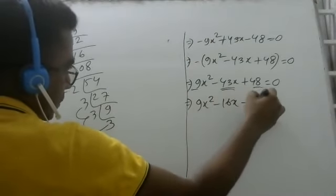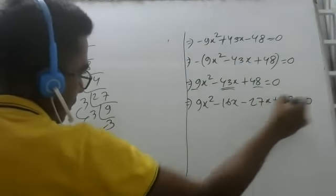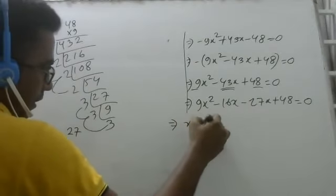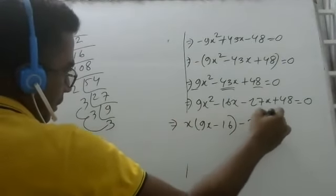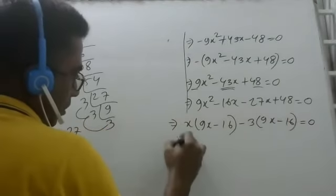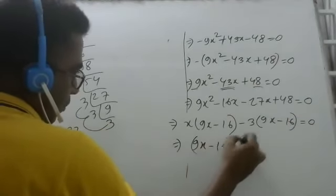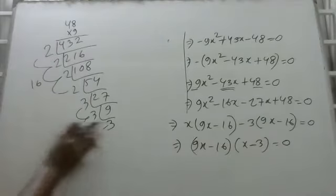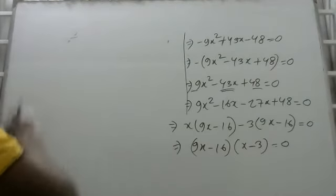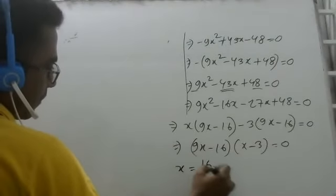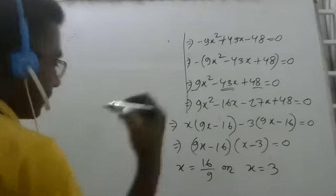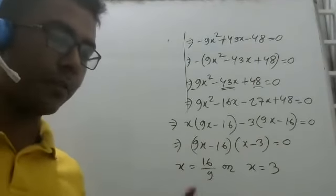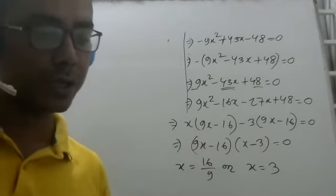So 9x squared minus 16x minus 27x plus 48 is equal to 0. Taking common: 9x minus 16 gives 9x minus 16 equal to 0, so x is equal to 16 by 9. Also factoring gives x minus 3.